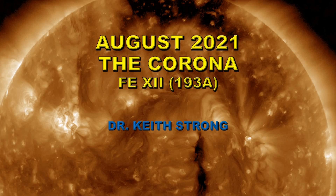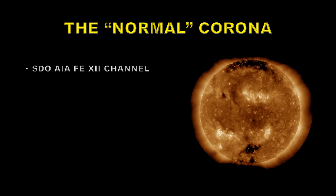Our next video is about the main corona — the normal corona — which is at about 1 million degrees. To see this corona we need to look at the iron 12 line as seen by the AIA instrument on the Solar Dynamics Observatory. Its peak temperature is about 1.2 million degrees.